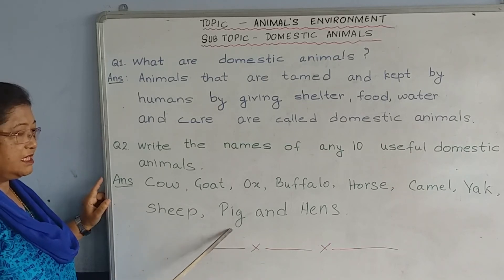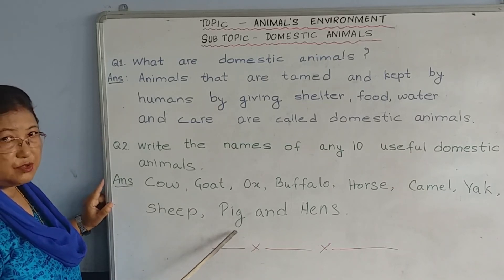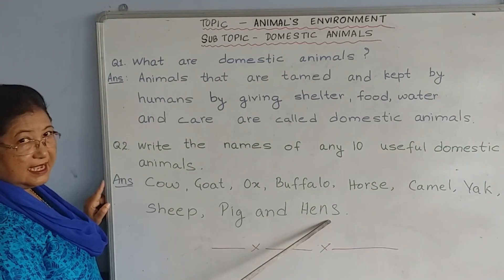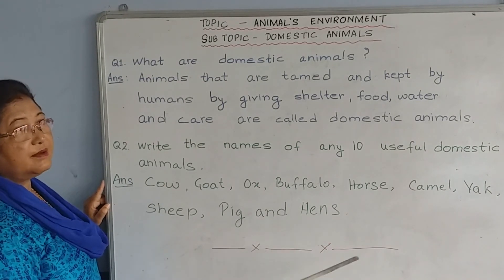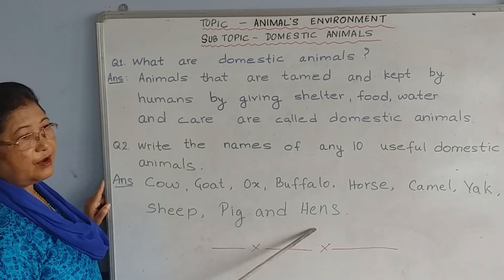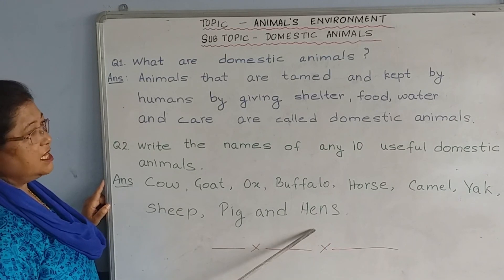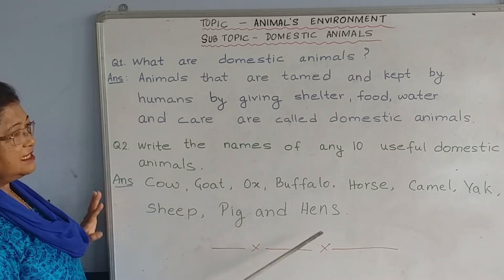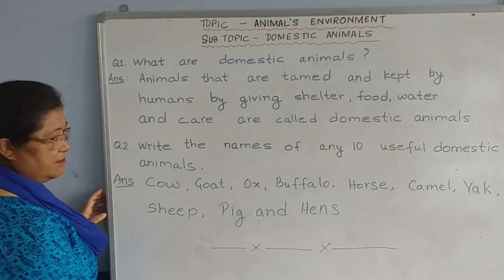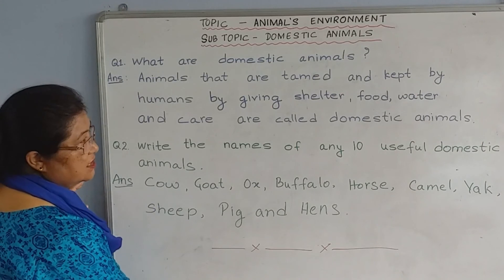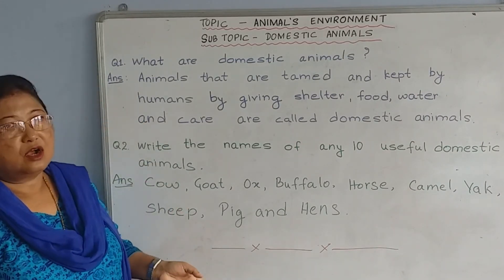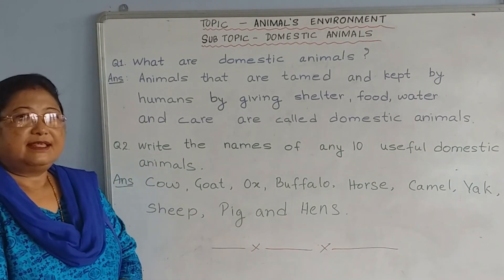Pig is especially used for meat. And hen also gives us eggs, and people also keep hen for meat. So these are the ten different useful domestic animals. Please go through this and write in your copy. Thank you.